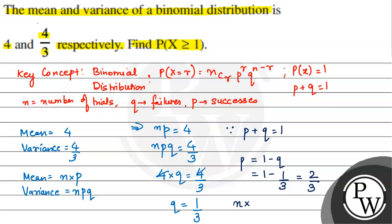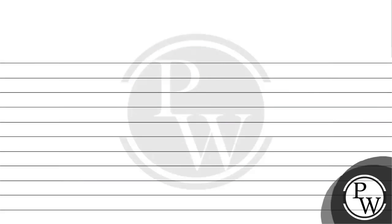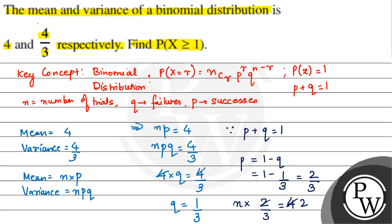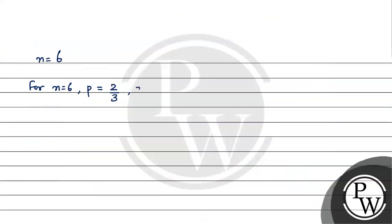Substituting into NP: N multiplied by P, where P is 2 by 3, equals 4. This gives N equals 6. So for N equal to 6, P is 2 by 3, and Q is 1 by 3. Let us now set up the binomial distribution.